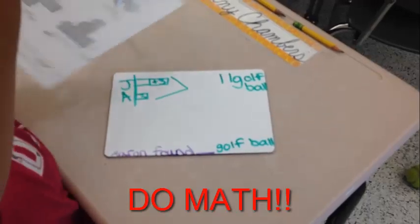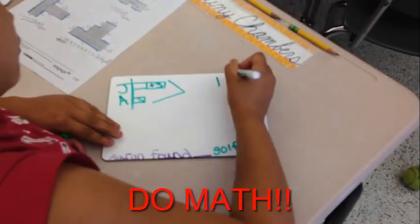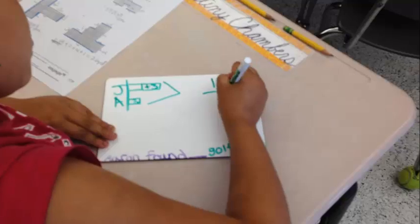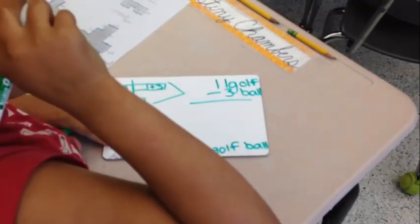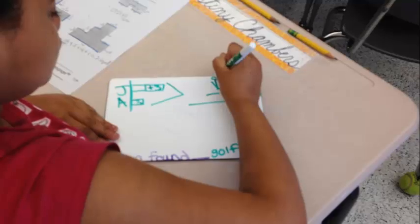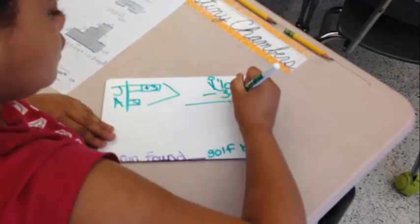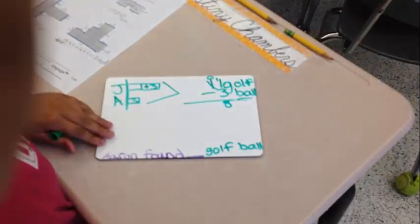Adriana? Eleven minus three. Eleven minus three. Because we already know those three went to Josh. So let's do eleven minus three. And who can tell me what is eleven minus three? Aisha? Eight.